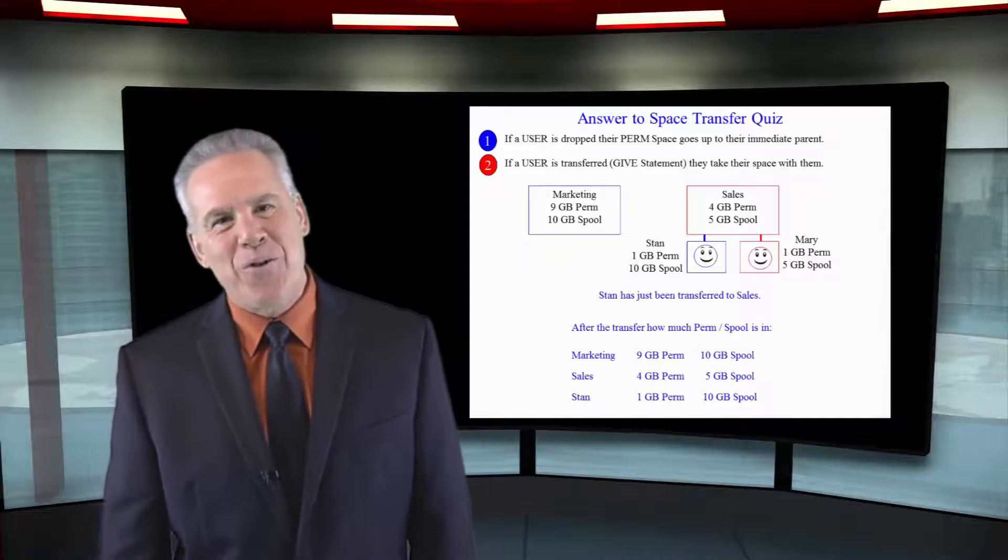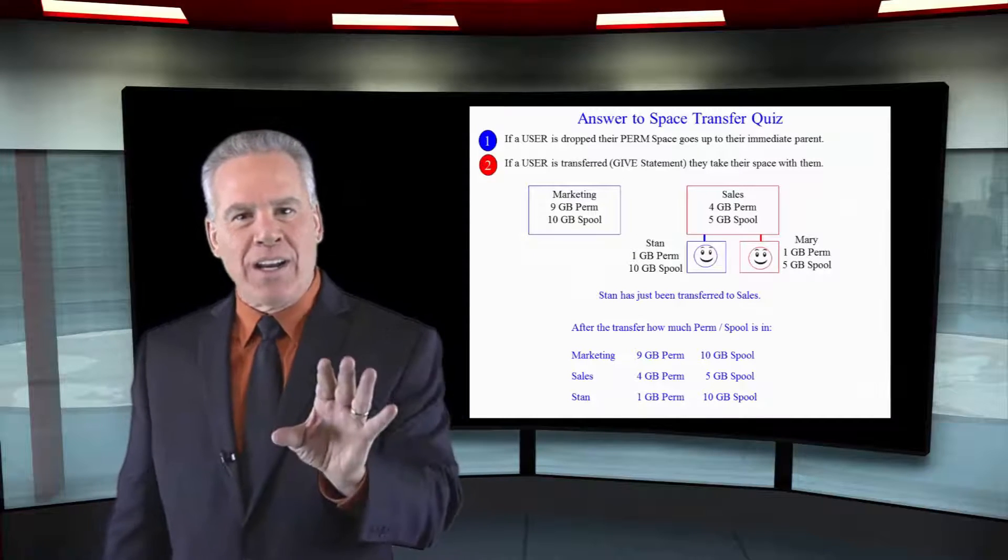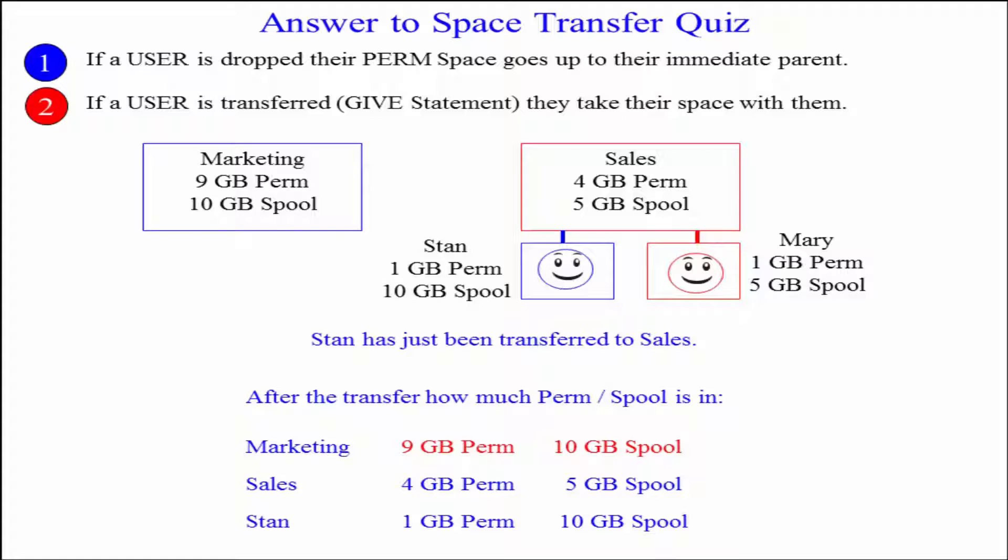How'd you do? Did things go awry? Because Marketing has 9 gigabytes of perm, 10 gigabytes of spool. Sales has 4 gigabytes of perm, 5 gigabytes of spool. And Stan, under Sales, has 1 gigabyte of perm, 10 gigabytes of spool.